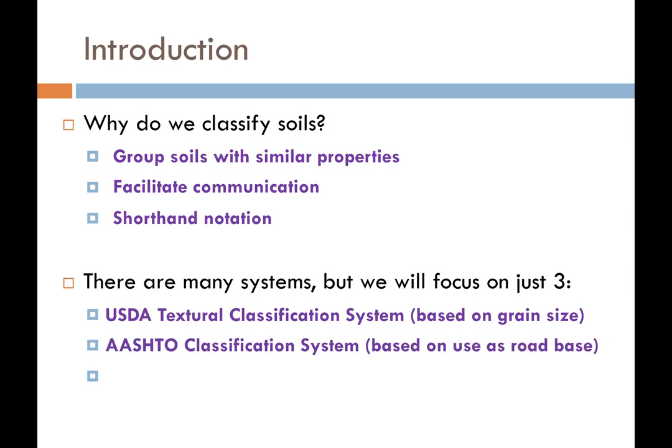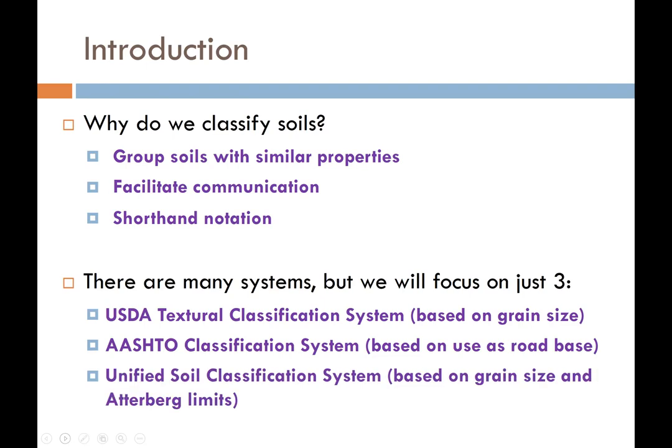The AASHTO classification system — which stands for the American Association of Safety Highway and Transportation Officials — helps engineers use soil for road base or base to support pavements, making it very specific to transportation applications. The third and most widely used system is the Unified Soil Classification System, developed by geotechnical engineers for geotechnical engineers. It is based on both behavior and composition, making it a comprehensive system we'll learn in depth.